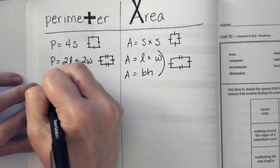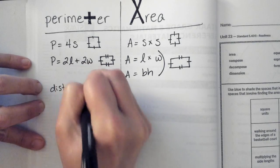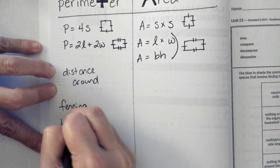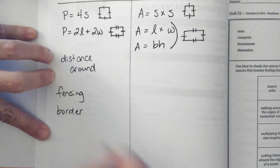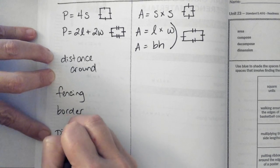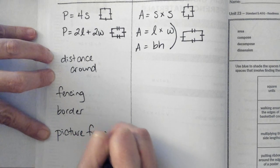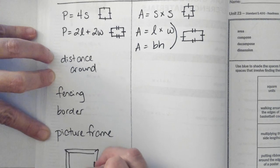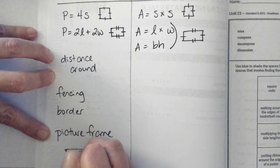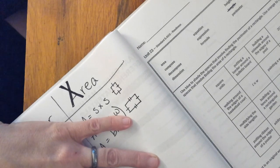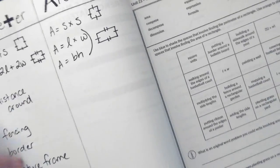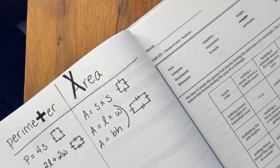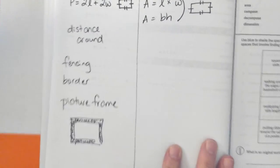Perimeter is the distance around, and it can be used for things like fencing or border. Perimeter is like a picture frame. I'm actually going around the picture frame writing the word perimeter.